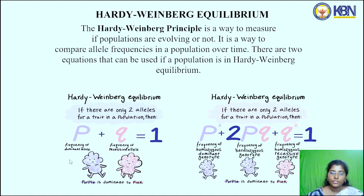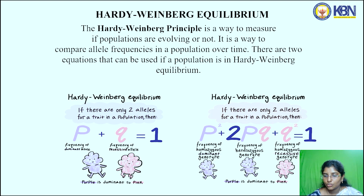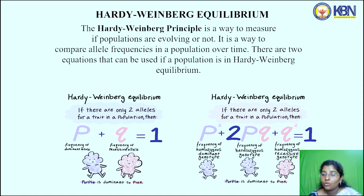When purple is dominant over pink, this equation is used. For the second equation, p² + 2pq + q² = 1: p² is the frequency of the homozygous dominant genotype; 2pq is the frequency of the heterozygous genotype; and q² is the frequency of the homozygous recessive genotype. All together they equal 1.